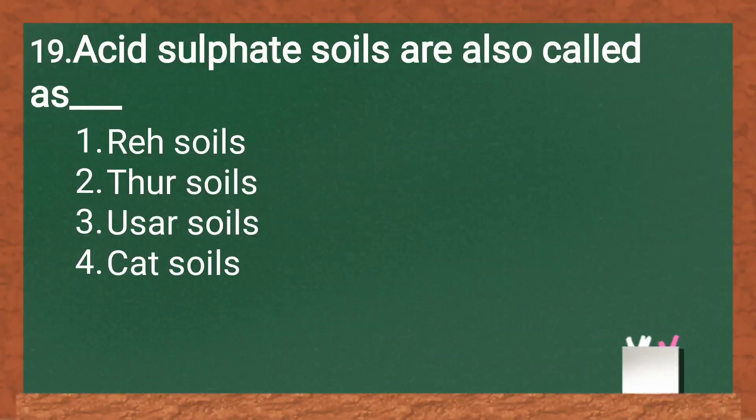Acid sulfate soils are also called as re-soils, dursoils, uswithey soils, or cat-clays. The answer is cat-clay soils.